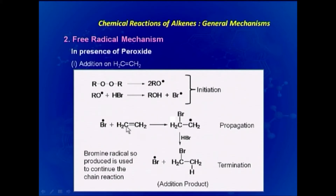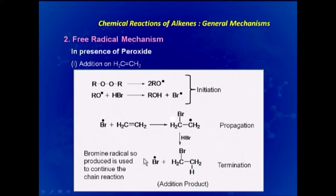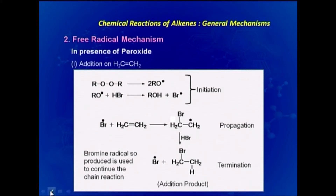The Br free radical attacks the alkene's double bond, leading to a free radical intermediate in which Br has already been added. This radical then reacts with another HBr molecule, abstracting an H radical and generating a new Br free radical. This bromine free radical continues the chain reaction as propagation, and the third step can be considered termination. The addition product is CH2Br–CH3.